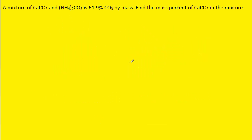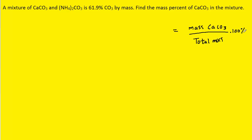If you haven't done so yet, pause the video and try to answer this question on your own first before listening on. In order to find the mass percent of calcium carbonate in the mixture, we would take the mass of calcium carbonate and divide it by the total mass, then multiply by 100. That's the basic definition for percent by mass, but we don't know either the total mass or the mass of calcium carbonate, and that's what makes this question rather challenging.